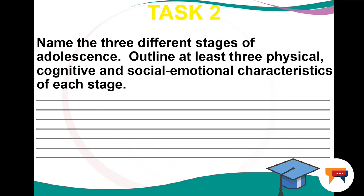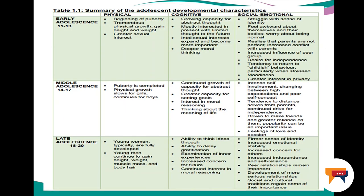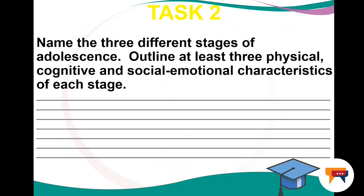Task 2: Name the three different stages of adolescence. Outline at least three physical, three cognitive and three social-emotional characteristics of each stage. Remember our discussion as well as our summary table — it will help you complete this task.